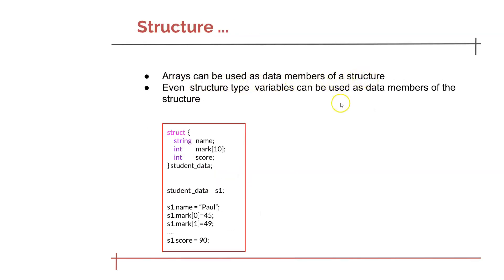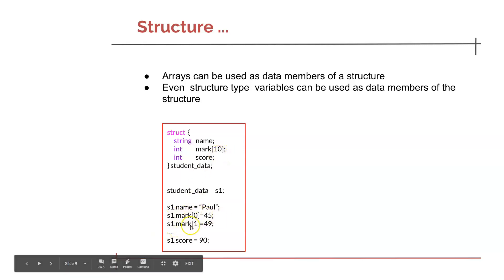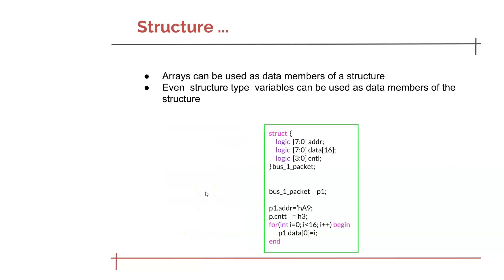Arrays can be used as data members of a structure. For example, you can add a data member like 'mark[20]' to the same structure and access it as 's1.mark[0]', 's1.mark[1]', and so on. Here is another example more relevant to SystemVerilog verification: a structure named 'ethernet_packet' representing a data packet transmitted with an address, 16 bytes of data, and a control field. The members are ADDR, data, and control, where data is an array of 'logic[7:0]', address is a 'logic[7:0]' variable, and control is a 'logic[3:0]' variable.